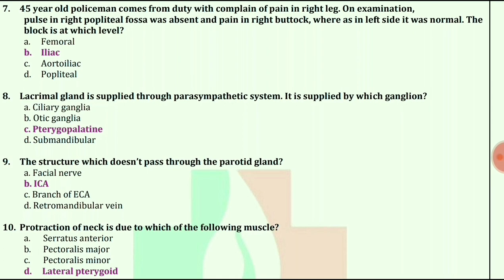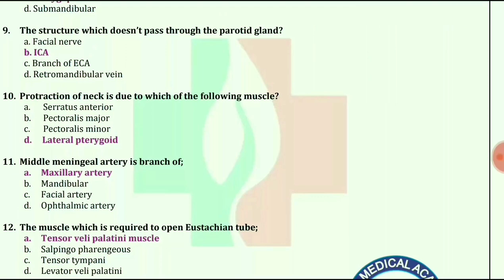The structure which doesn't pass through the parotid gland. Answer is ICA.